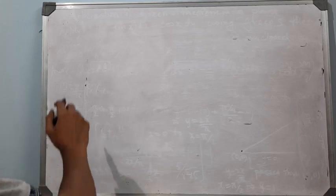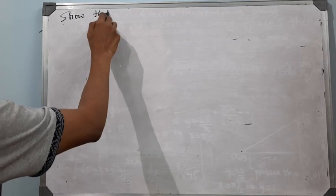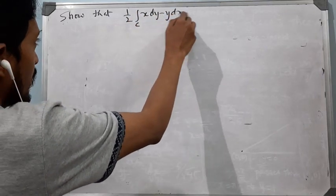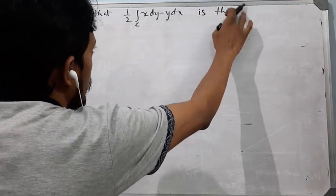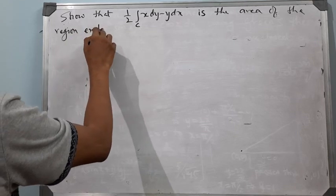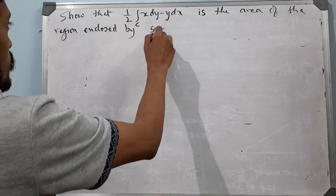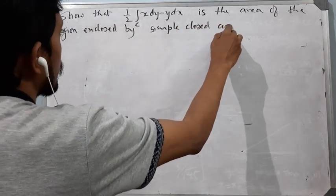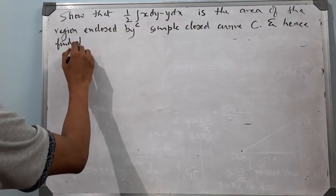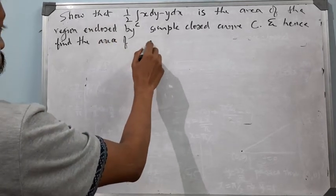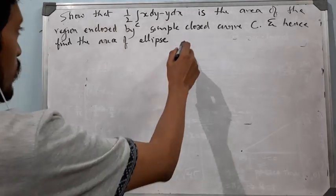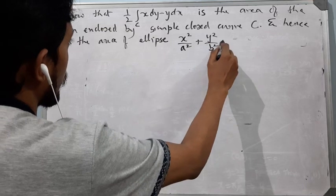Now we consider another application of Green's theorem: show that (1/2) ∮_C (x dy − y dx) is the area of the region enclosed by a simple closed curve C, and hence find the area of the ellipse x²/a² + y²/b² = 1.